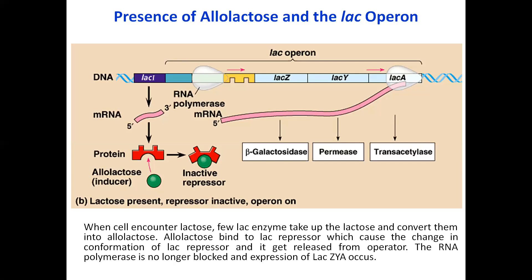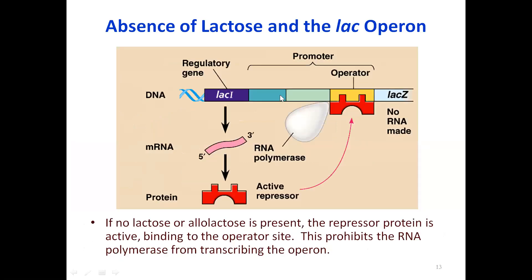When the cell encounters lactose, some enzymes convert lactose into allolactose. Allolactose acts as an inducer. As allolactose binds to the repressor — which is already bound on the operator — the repressor becomes inactive due to a conformational change, and is removed from the operator region. With the operator clear, RNA polymerase has a clear path and can transcribe the downstream structural genes. When there is no lactose in the cell, there is no need for expression of the genes required for lactose utilization.